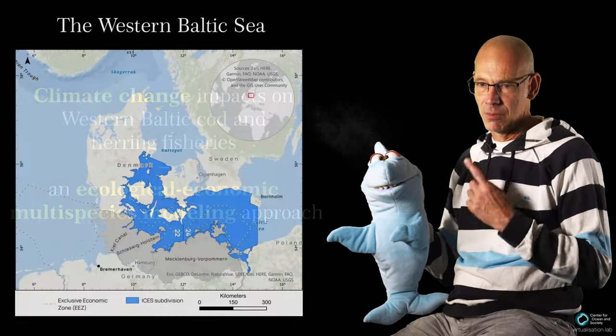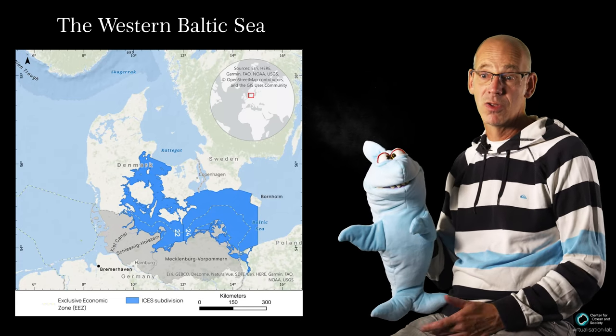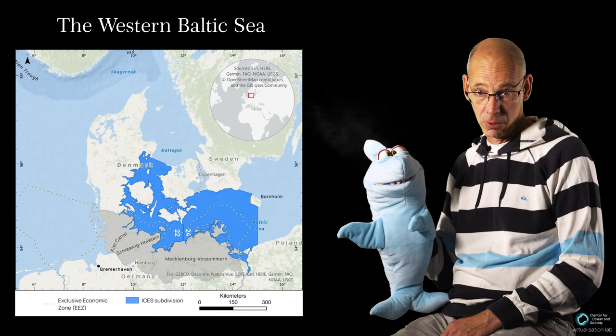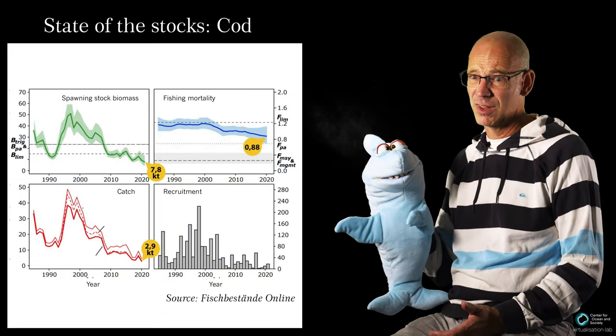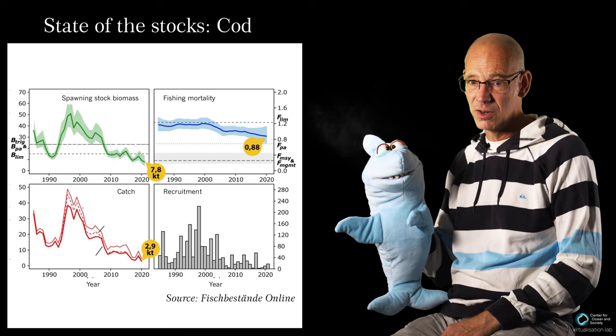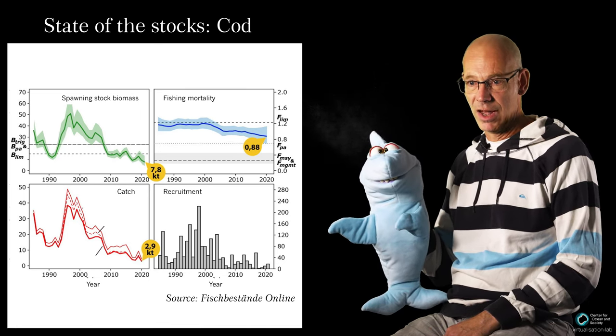Okay, okay. So this is the area of interest, the Western Baltic. Traditionally, cod and herring have been very important for the fishery. For the stocks, it's not looking that good. The spawning stocks decreased to very low levels in recent years. And what is alarming? Recruitment seems to be impaired.